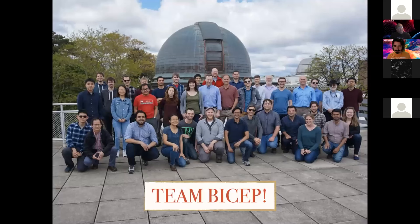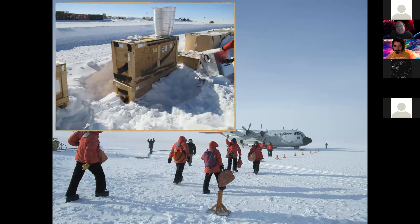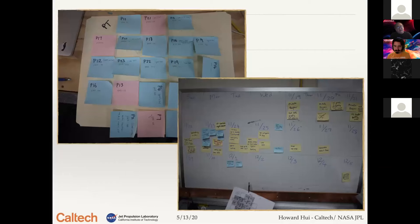Our team — the BICEP experiment — spent many months in the lab building this telescope in North America. Then we hopped on a plane and flew down to the South Pole around Halloween every year to install the telescope. First we need to get our cargo, which was left outside buried under the snow, and take it out. Then we did some careful planning — the most important thing being the beer waiting for us at the end of our calendar when we have the telescope up and running. We have a very flexible schedule, easily changed by moving sticky notes around.